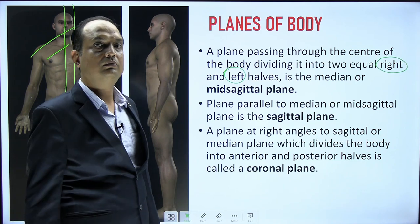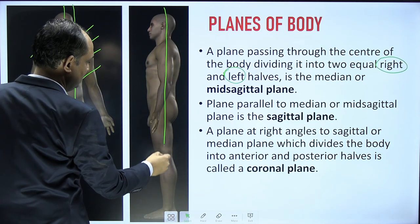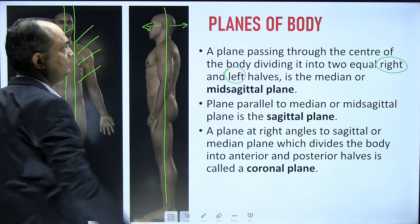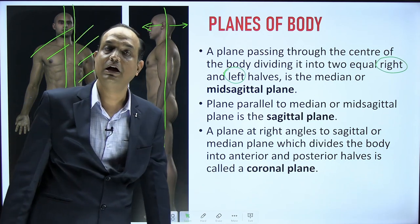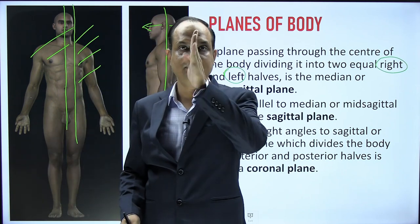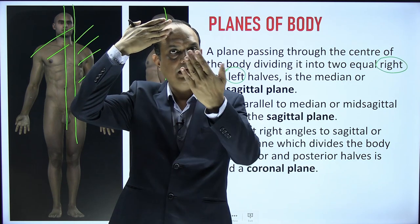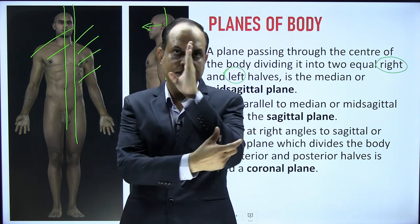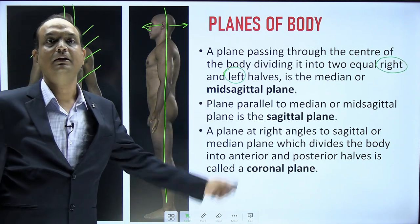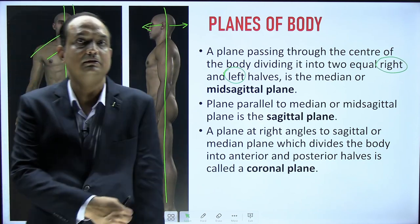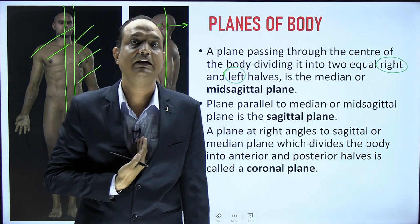The coronal plane divides the body into anterior and posterior parts. It is at right angles to the sagittal plane and divides the body into the anterior and posterior half. So the coronal and sagittal planes are at right angles to each other: the mid-sagittal plane divides into right and left halves, while the coronal plane divides into anterior and posterior halves.